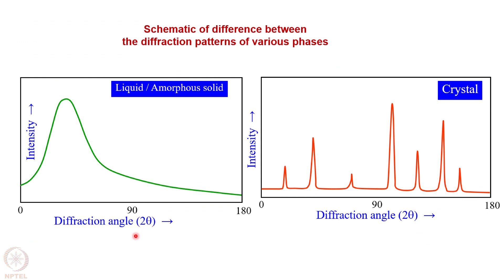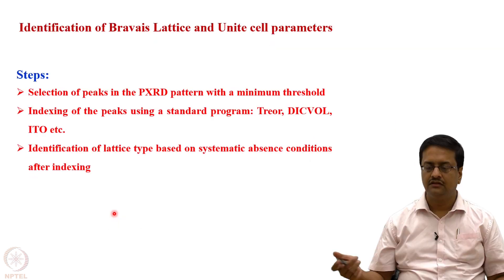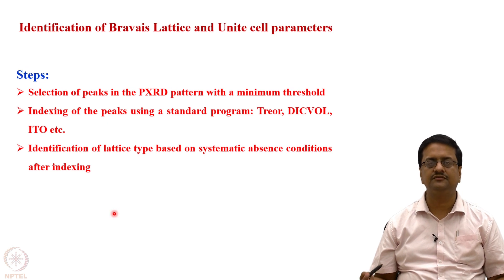Amorphous materials show a very broad hump in the diffraction pattern, while crystalline materials follow Bragg's law and give individual sharp peaks. This indicates that a material is crystalline if it gives a set of peaks following Bragg's law; if it gives one or multiple humps it is a liquid or amorphous sample. To identify the Bravais lattice and unit cell parameters from powder X-ray diffraction data, we first select the peaks in the PXRD pattern with a minimum threshold.